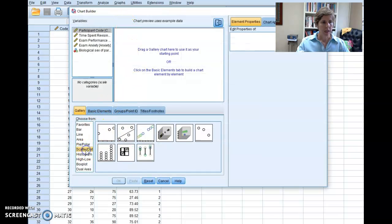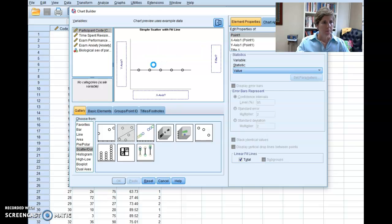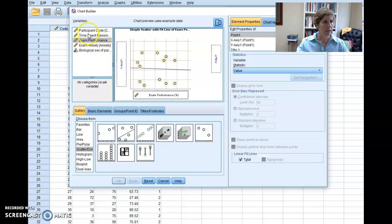We're going to go down here to Scatter or Dot, so you have multiple options to pick from. I would say go with this second option because it also gives you the line of best fit. So you drag it into the space, and I'm going to look at exam performance and I'm going to look at time spent revising.